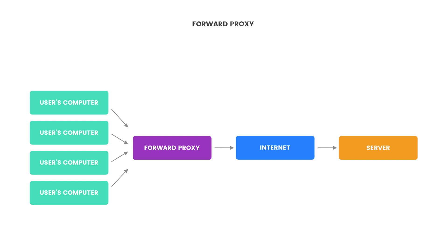There are a few reasons why a proxy can be used. First of all, it's used to avoid browsing restrictions. For example, sometimes schools or different companies would like to provide people who use their network with limited access to the internet, and the proxy can be used to overcome it. The second reason why the forward proxy might be used is to stay anonymous on the internet, because when we send requests through the proxy, the only visible IP is the one that the proxy server has.